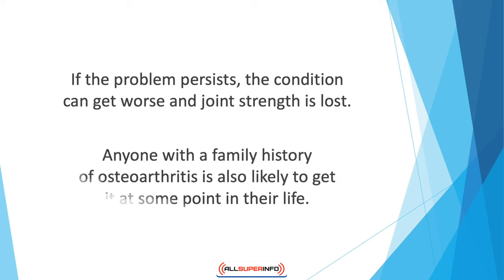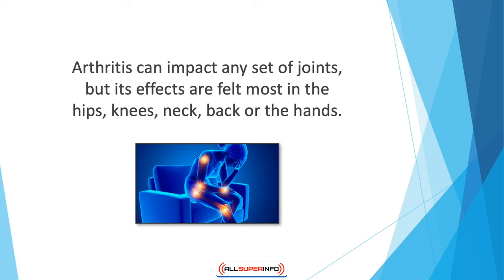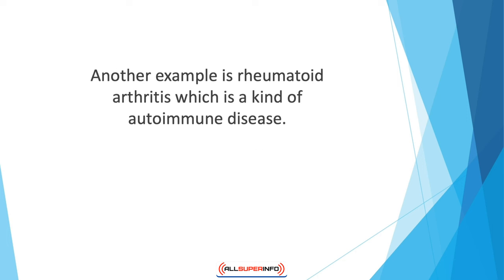If the problem persists, joint strength is lost. Risk factors for osteoarthritis include obesity, age, and any previous injury. Anyone with a family history of osteoarthritis is also likely to develop it at some point. Arthritis can impact any set of joints but its effects are felt most in the hips, knees, neck, back, or the hands. Another example is rheumatoid arthritis, which is a kind of autoimmune disease.